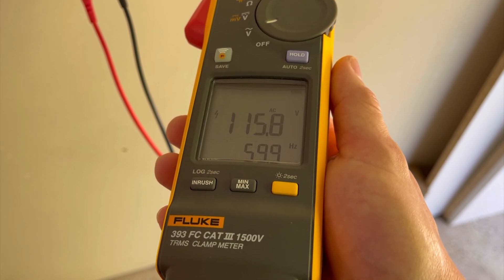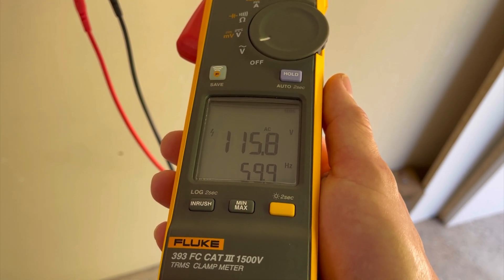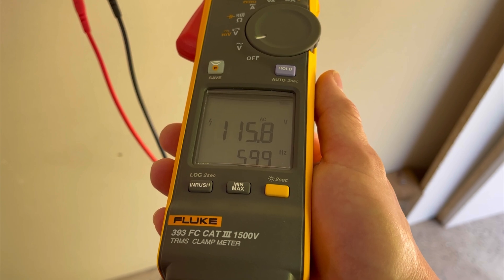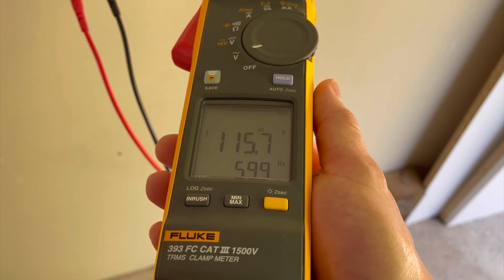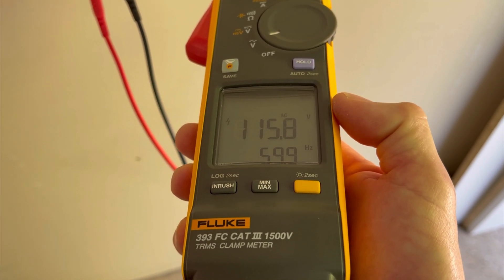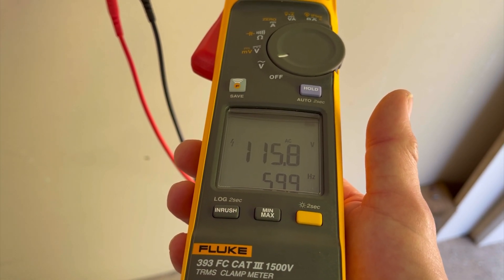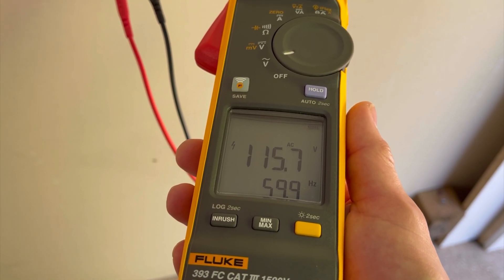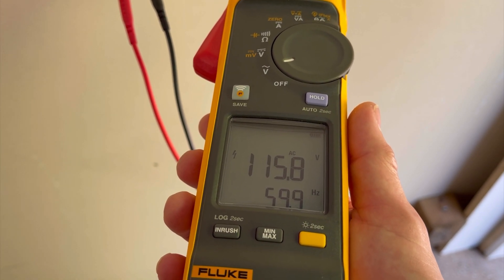We got our trusty Fluke meter here. If you're getting into solar and off-grid, you really want a good meter like this because it's rated for that kind of power. Solar can really hurt you if you don't know what you're doing. You see 115.8 volts at almost 60 hertz, so it's a pure sine wave coming through.